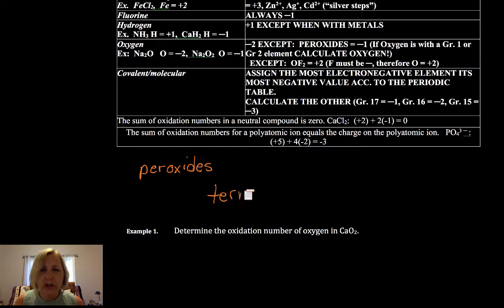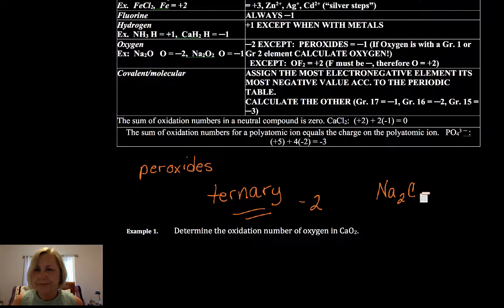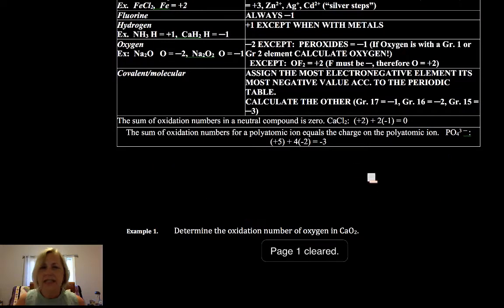Certainly once you get to ternary molecules and larger, then oxygen is going to be negative 2. So if you saw, say, sodium dichromate, that's a ternary compound. Automatically, you can assign that oxygen to a negative 2. When you're going to come across your peroxides, are in binary. So just be a little careful when you see oxygen in a binary compound, especially with groups 1 and 2 would be your most common.